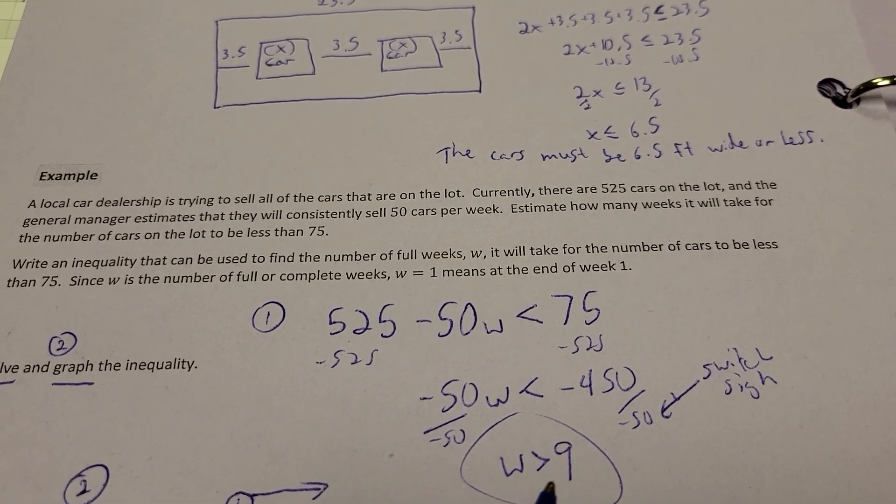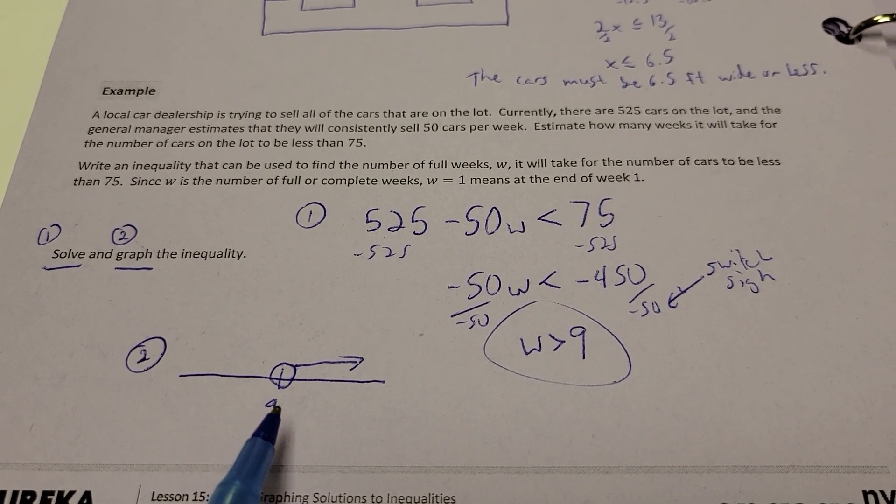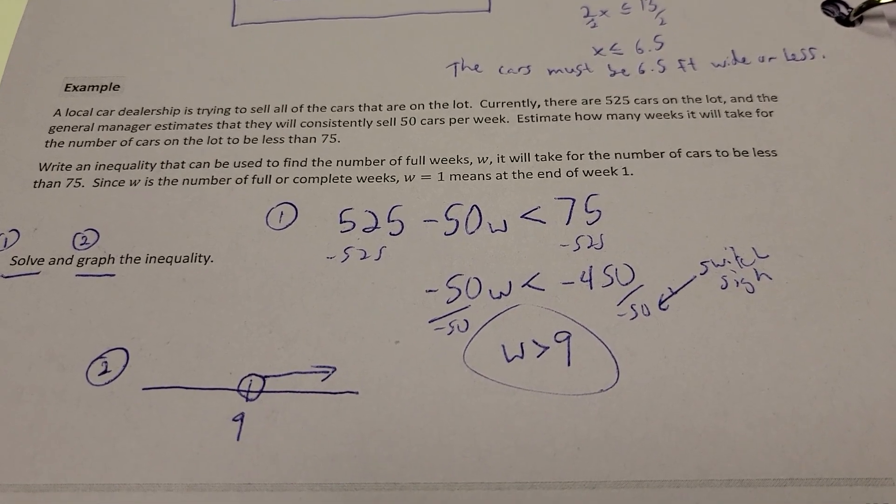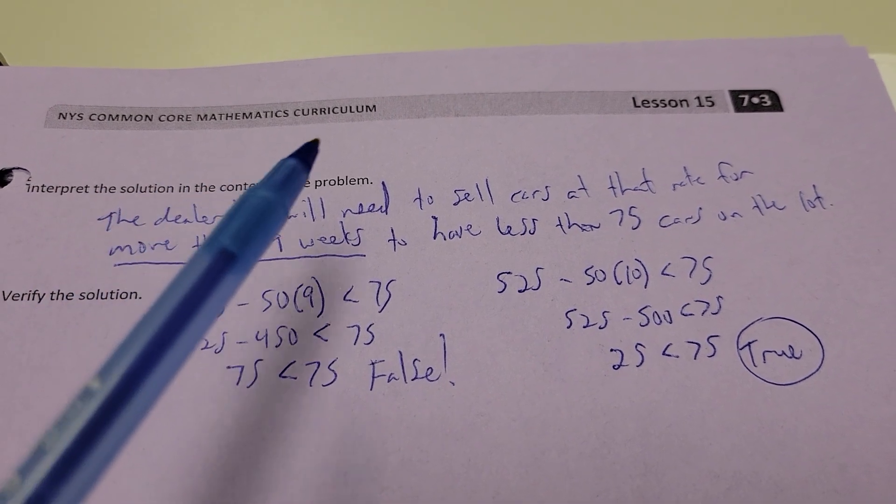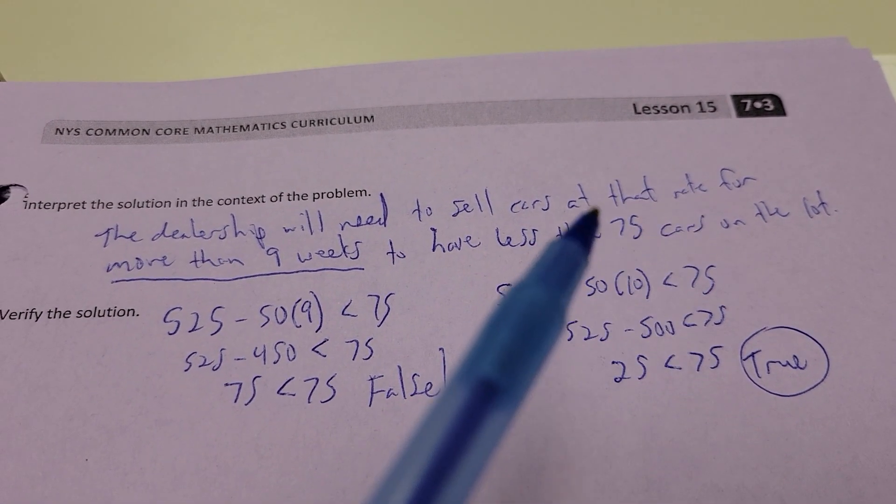Now, I've still got this negative 50W just hanging out here, and I've got a negative 450 here. So, instead of negative 50 times W, I'm going to divide by negative 50. But remember, when you divide each side by that negative like that, you're going to have to switch the sign. So, now the W is greater than 9. So, anything more than 9 weeks, here's my circle there, and greater than 9, it's going to get me down there. And the dealership will need to sell cars at that rate for more than 9 weeks to have less than 75 cars in a lot.